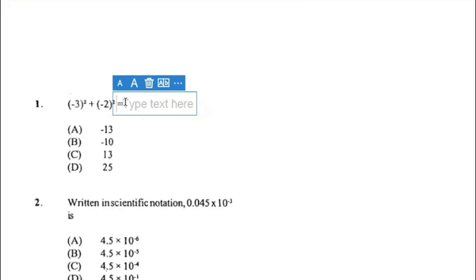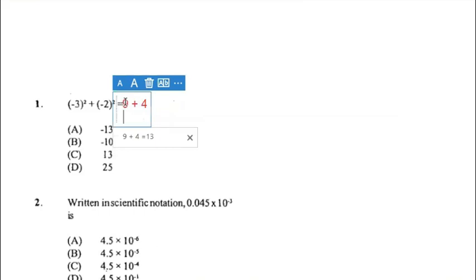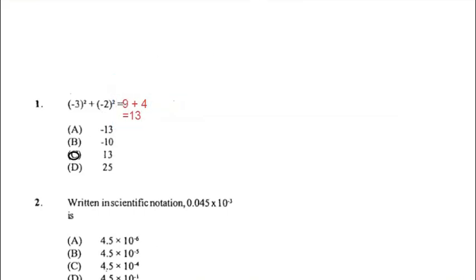Number one states negative three squared plus negative two squared. Remember, when you square a negative number it always becomes positive, so negative three squared becomes positive nine, plus negative two squared becomes positive four. Nine plus four is equal to thirteen, so the answer for number one is C.